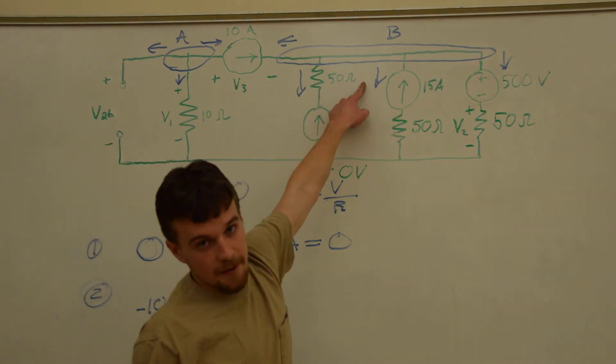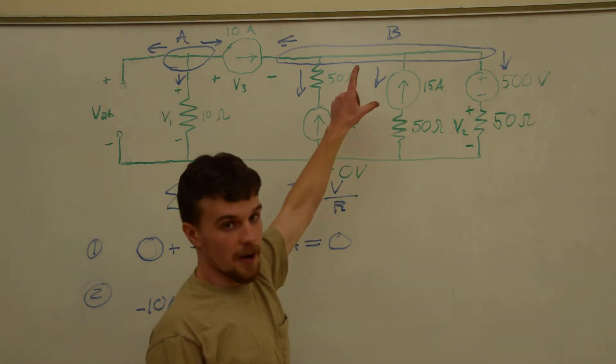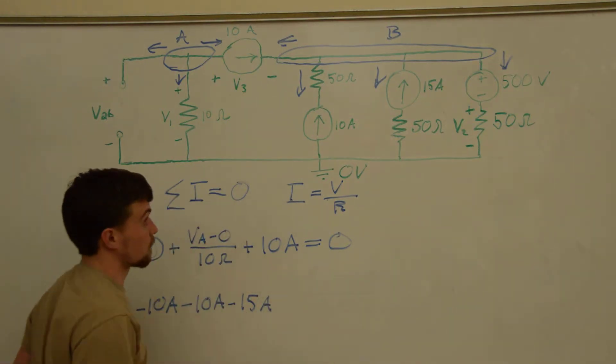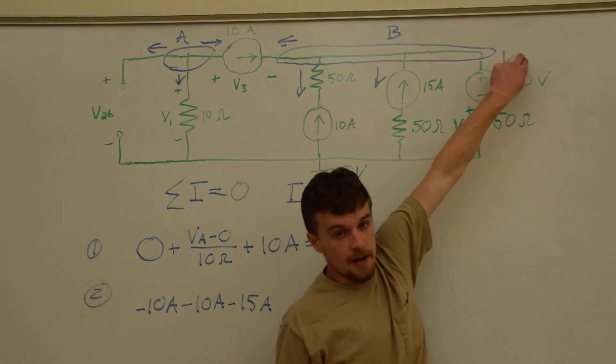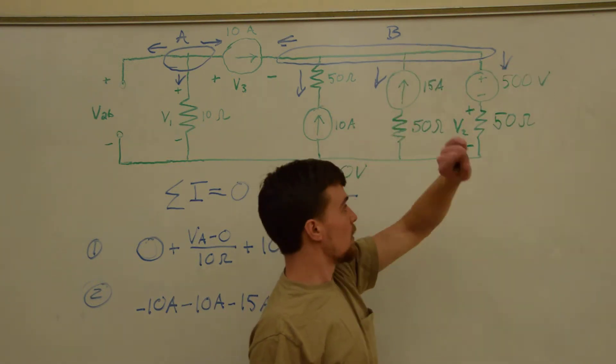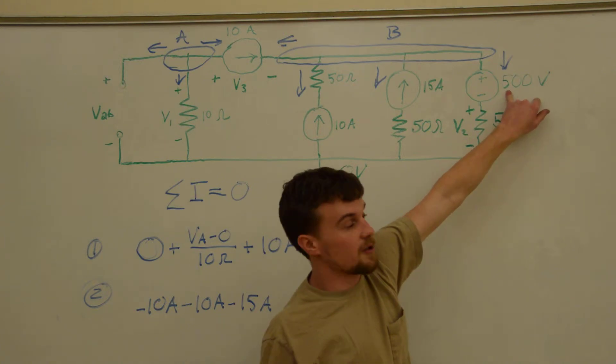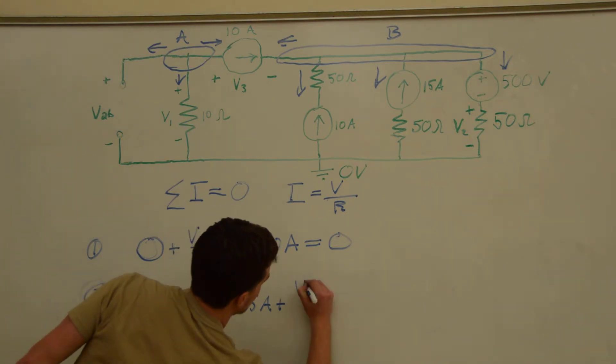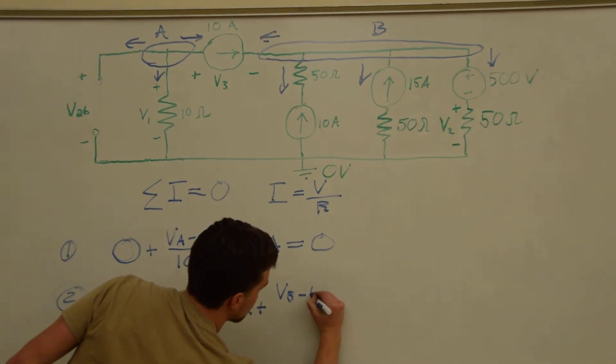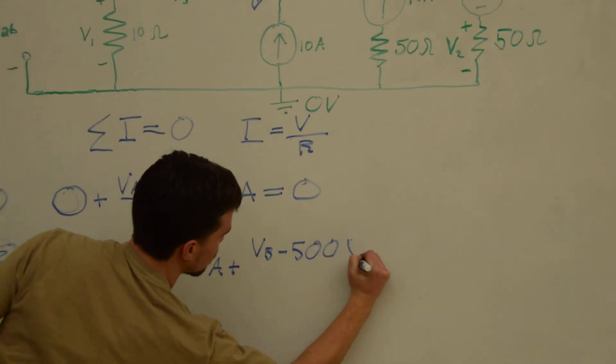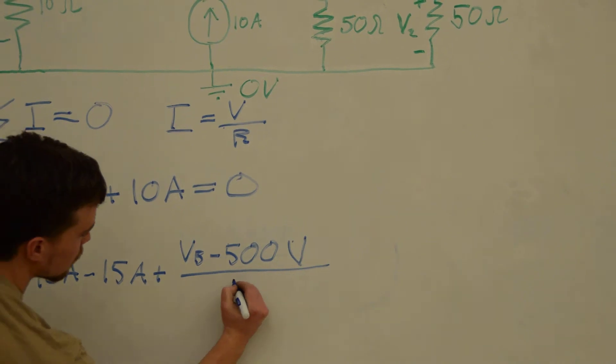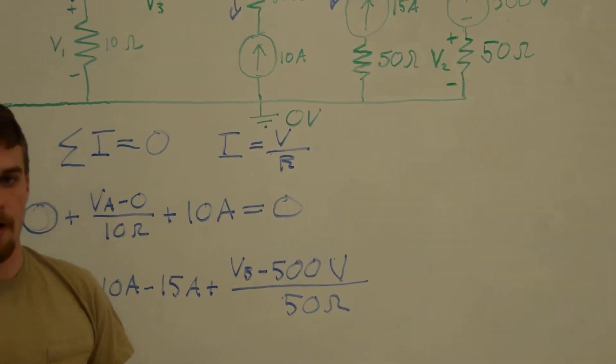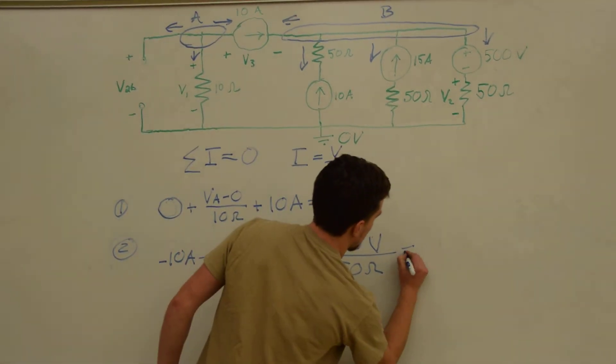Next, this current is defined by this source. They point in opposite directions. We have negative 15 amps. And finally, this current will be the voltage of this node minus this voltage divided by that resistor value. And since that's all of the currents leaving that node, again, we'll sum to zero.